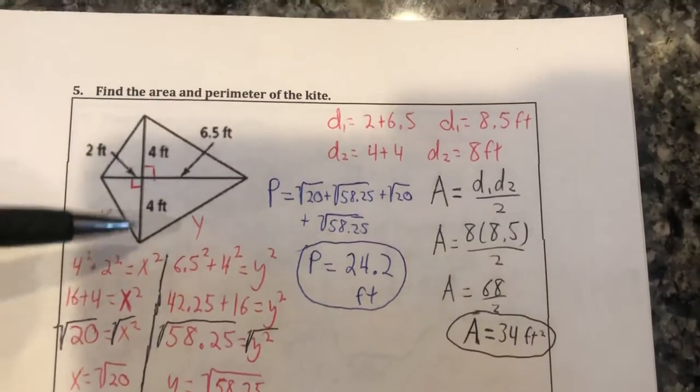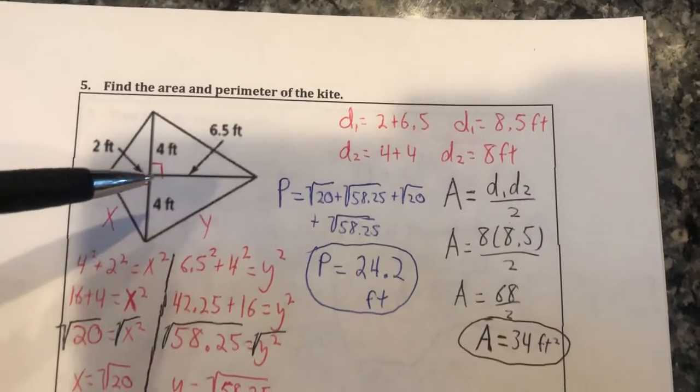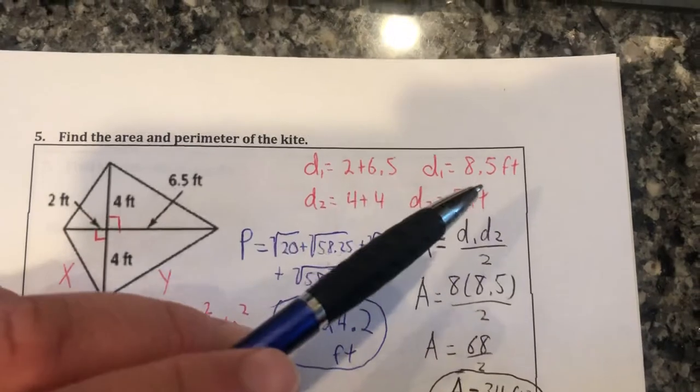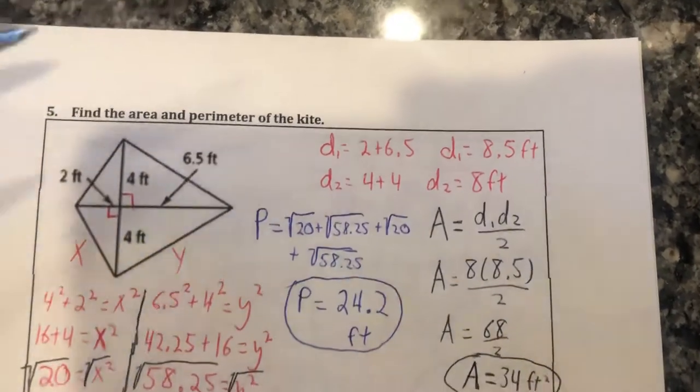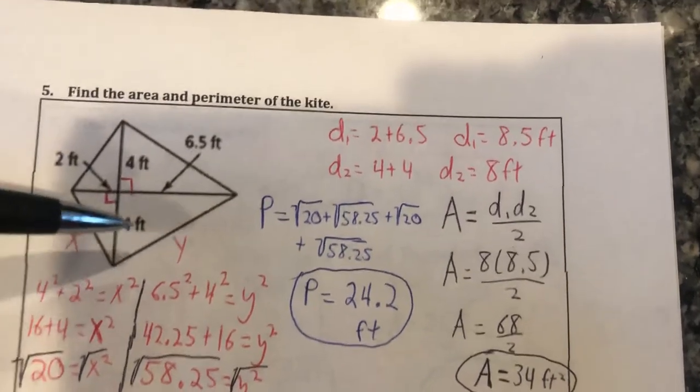Right away we've been given all the information we need to find the diagonals. So diagonal 1, I added 2 plus the rest of the way 6.5, so 2 plus 6.5 gives us 8.5 for the first diagonal. Diagonal 2 has been bisected; each half is 4, so 4 plus 4 equals 8.